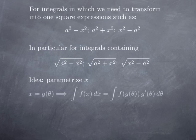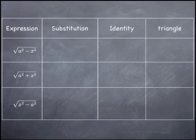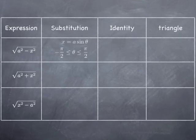We parameterize x as a function of another variable theta. That means we're going to replace x by g of theta and dx by the derivative of g of theta, in other words g prime of theta d theta. The condition for that to work is that g is one-to-one, so that going the other way really corresponds to a regular change of variable. Let's take a look at what kind of parameterization of x we're going to do in each one of these three cases.